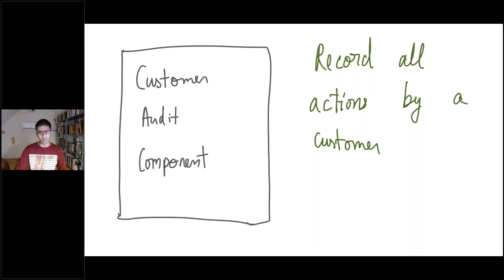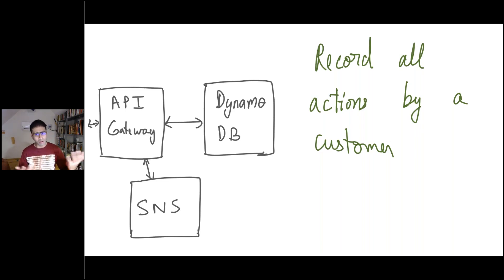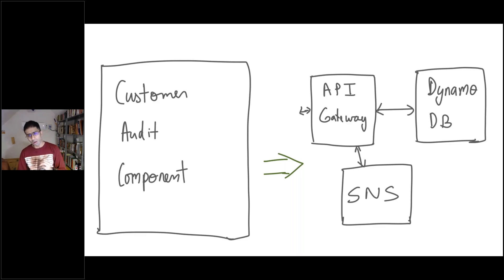There are multiple ways to design this component. One way is to come up with three sub-components. In this case I'm talking about AWS offerings. You have API Gateway, where you can code your APIs. Then you have DynamoDB, which is a low latency, high throughput in-memory data store where you can store your information. You also have SNS, through which you can publish. These are the standard AWS offerings — you can plug them together and build that out. What you've actually done is broken the large customer audit component into smaller problems. API Gateway, DynamoDB, and SNS are examples of abstractions that you have leveraged.